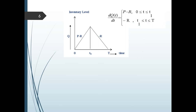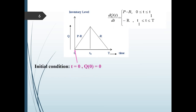The differential equation during the production phase is: the rate of change of inventory at any instant of time T is given by P minus R. So dQ(T)/dT equals P minus R, between 0 and T1. During the non-production phase, the rate of change of inventory is negative R, so dQ(T)/dT equals negative R during T1 to T. The initial condition is: at T equal to 0, Q(0) equals 0.